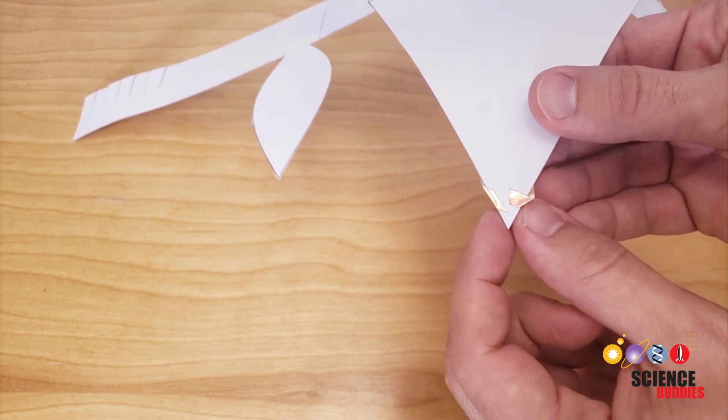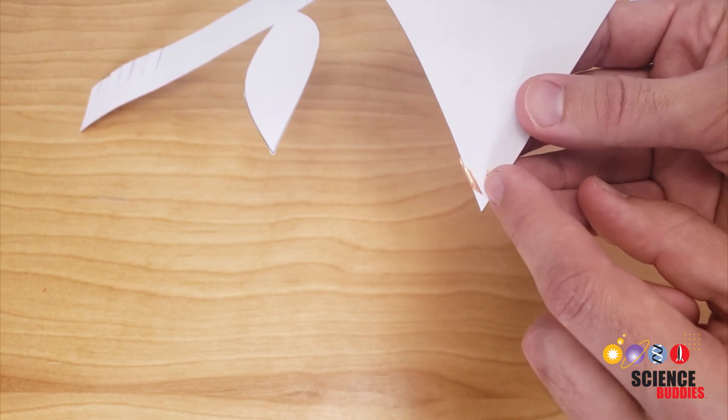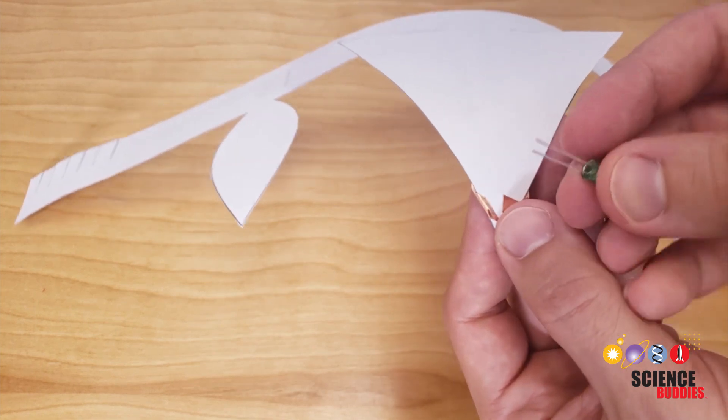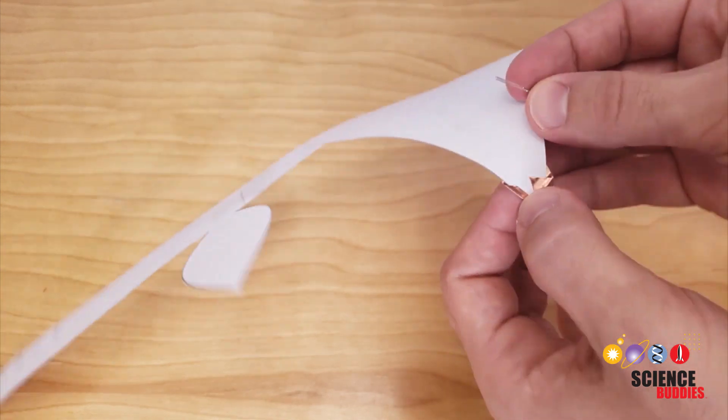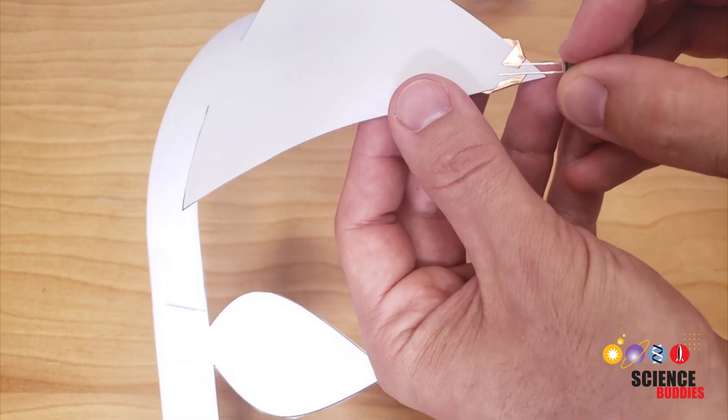If these are touching it will create a short circuit and your LED will not light up, so you need to make sure you have a gap between those two pieces. But they need to be pretty close together because the legs of the LED are not that long and we're going to need to connect one leg of the LED to each piece of tape here.